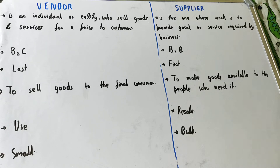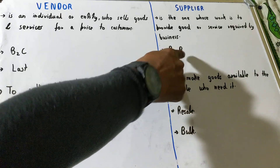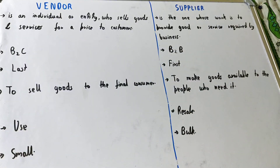If we talk about the business relationship, in the case of a vendor it is B2C — that is, a business-to-consumer relationship. But if we talk about the supplier, their business relationship is business-to-business, meaning they supply goods or services to other businesses.